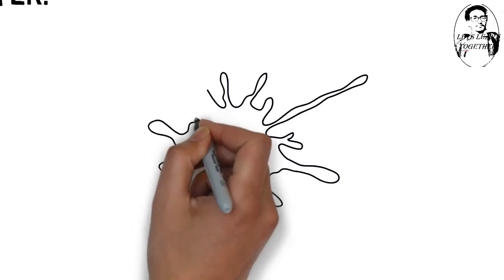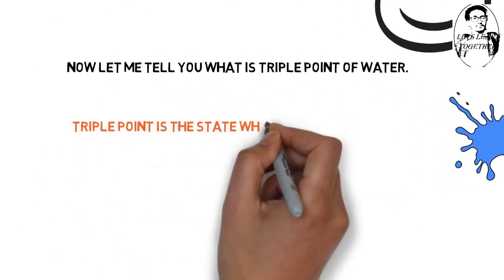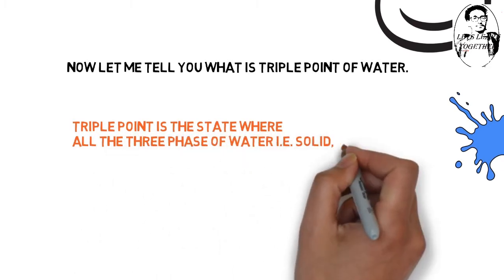Now question is what is triple point? Triple point is the state where all the three phases which is solid, liquid and gases are in equilibrium with each other.